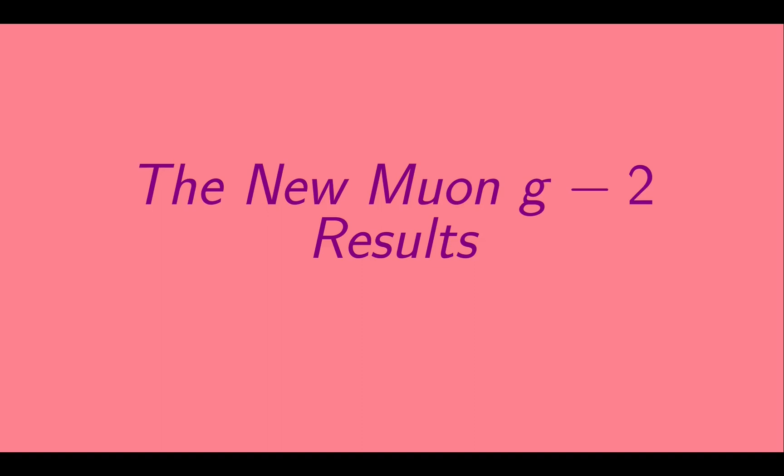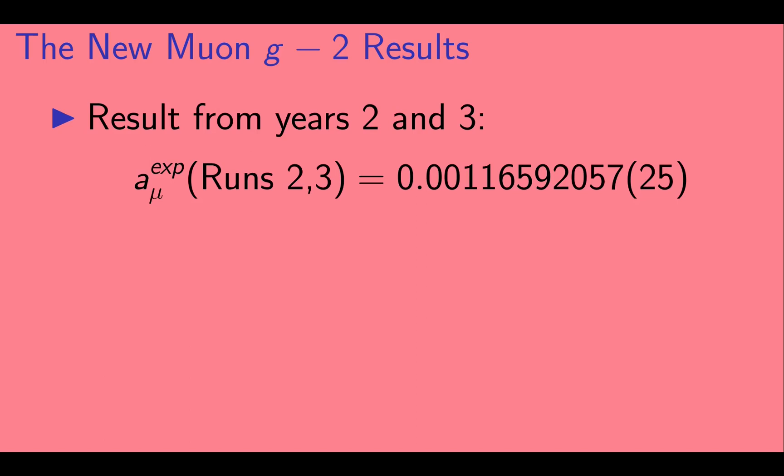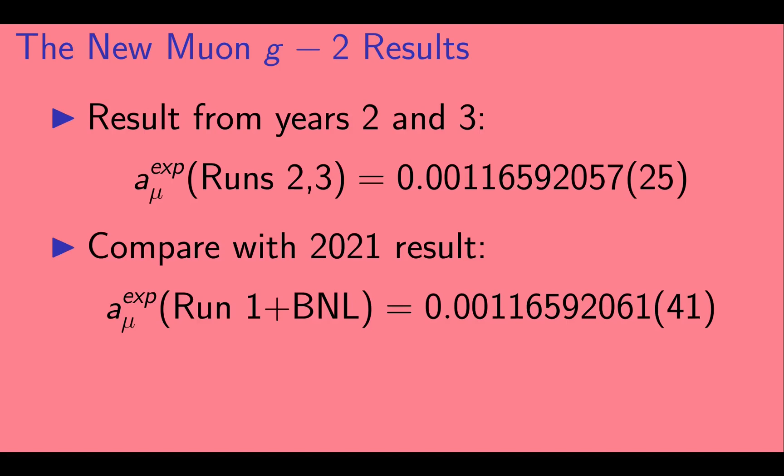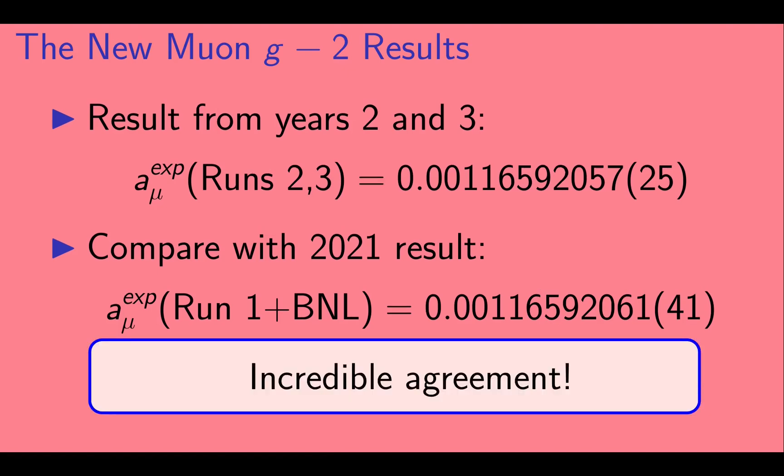Okay, so let's take a look at those new results. So here is the new result from muon g-2's data from years 2 and 3. We can compare this with their previous result that was a combination of their first year of data taking and the result from Brookhaven National Lab. We can see that the agreement between these two results is very impressive. The two results differ by less than, actually much less than, one sigma.